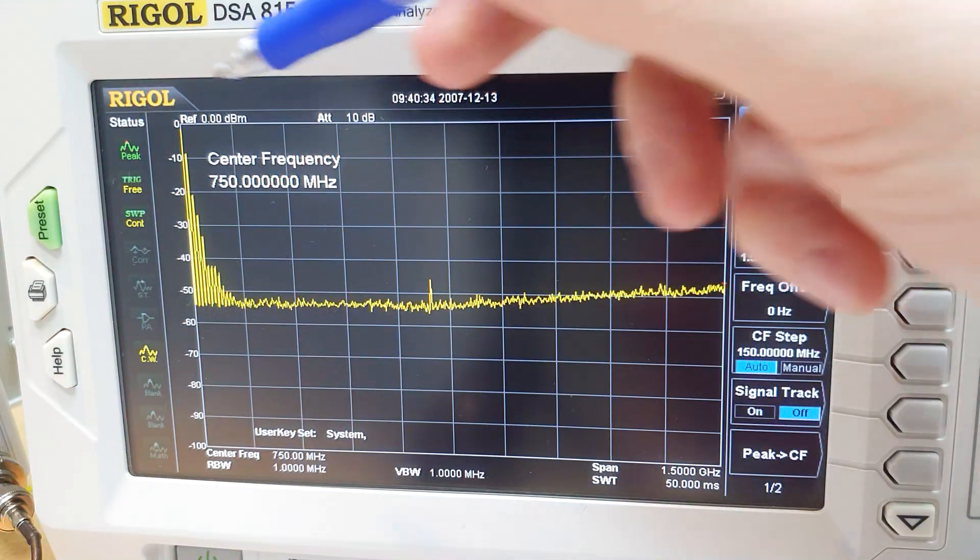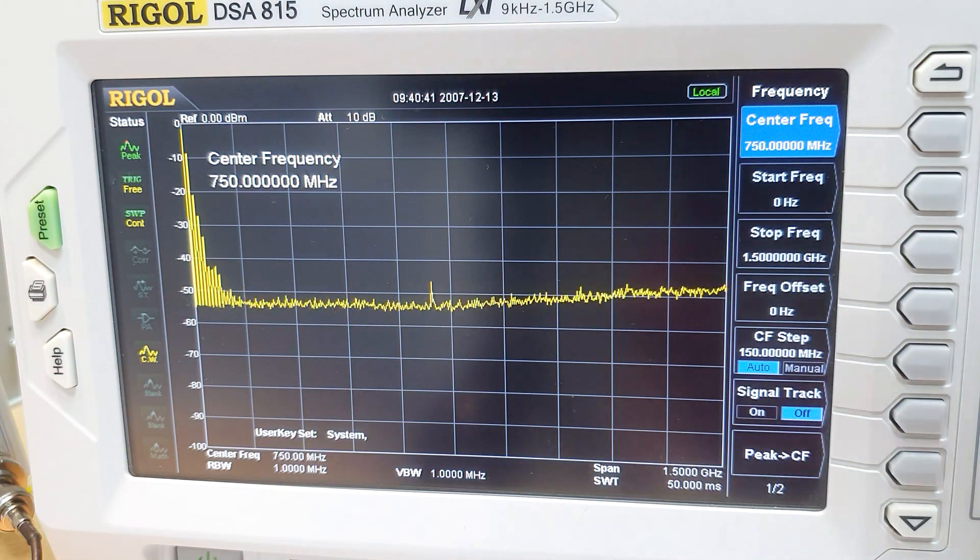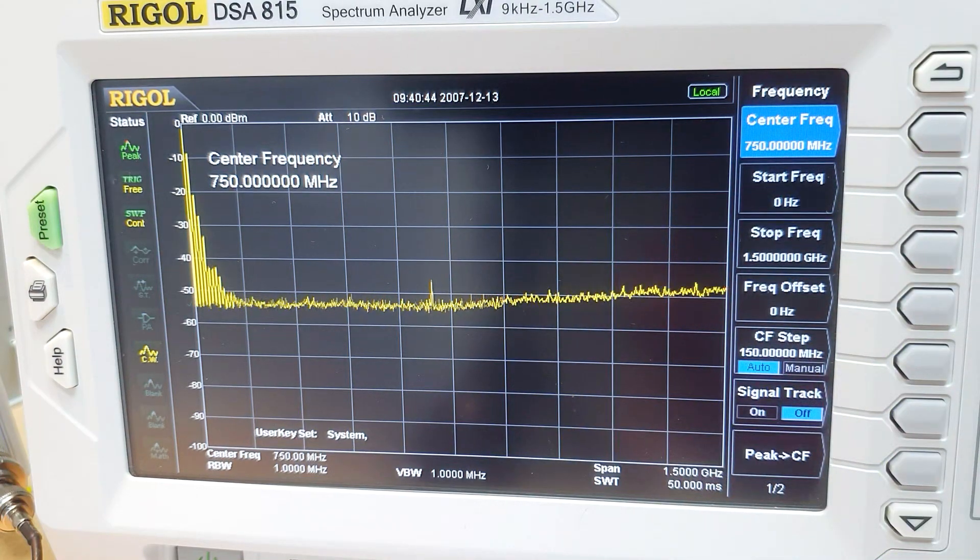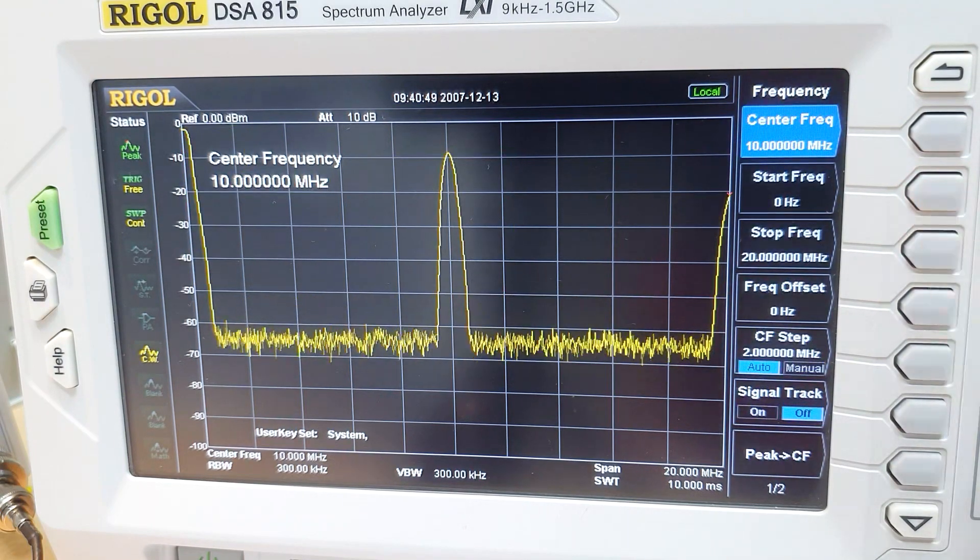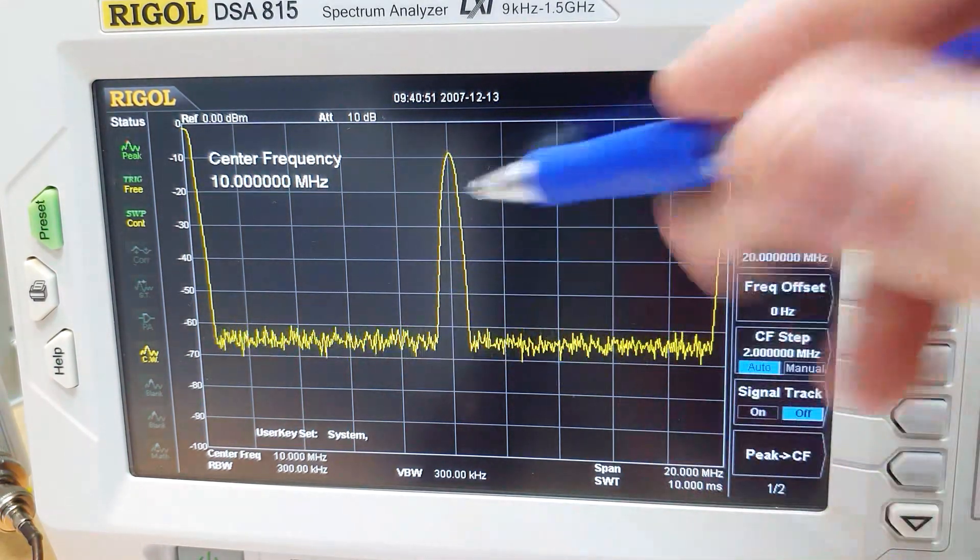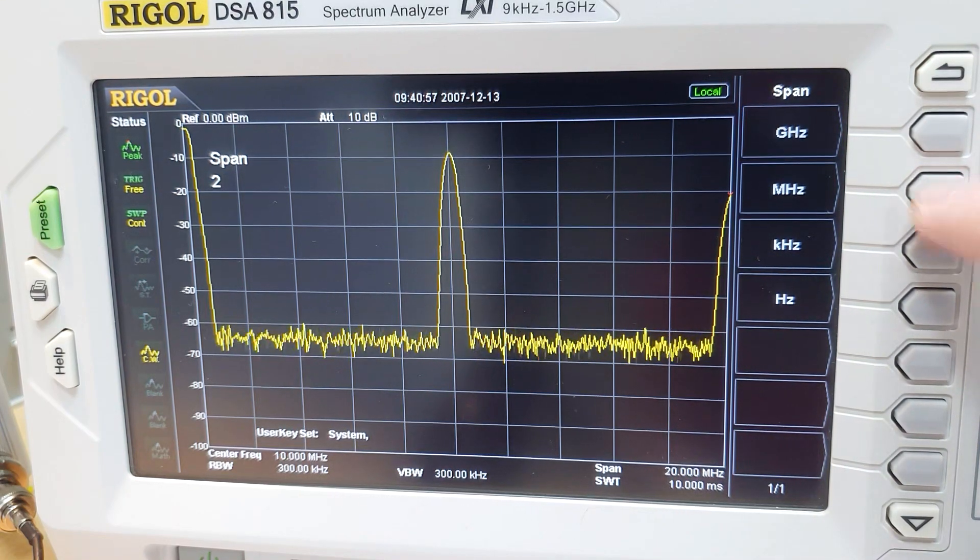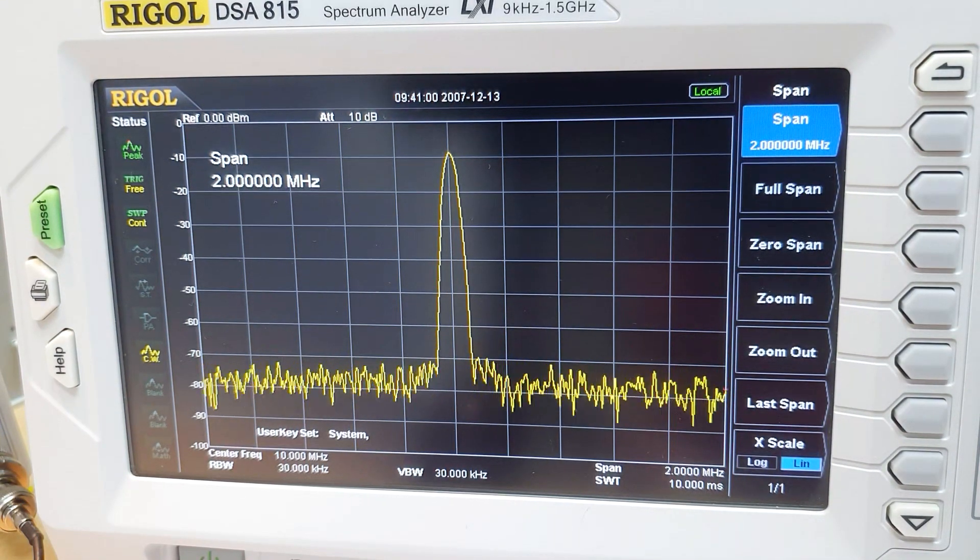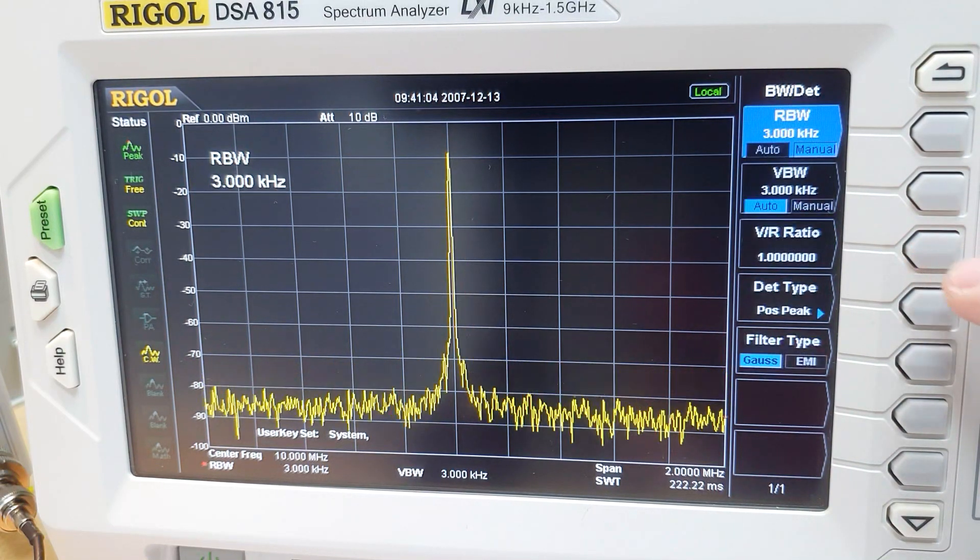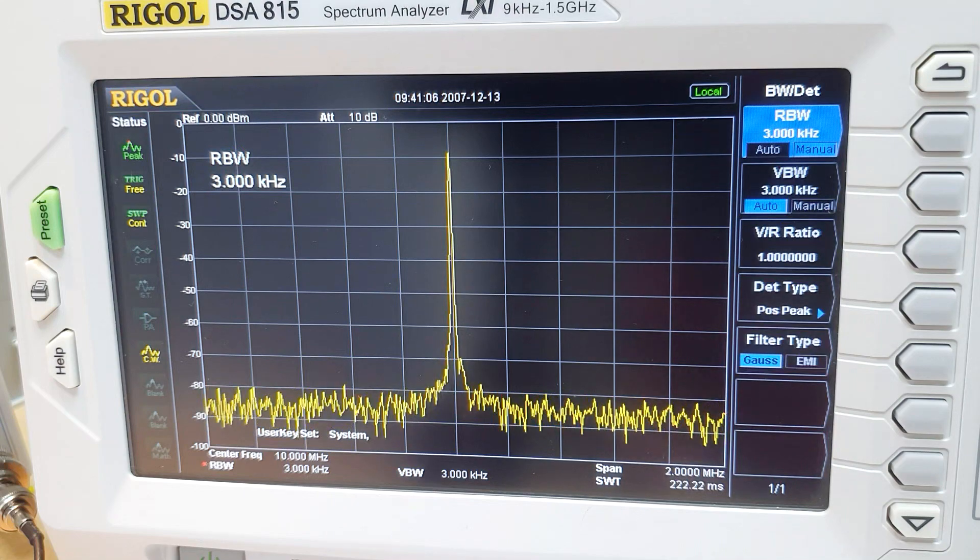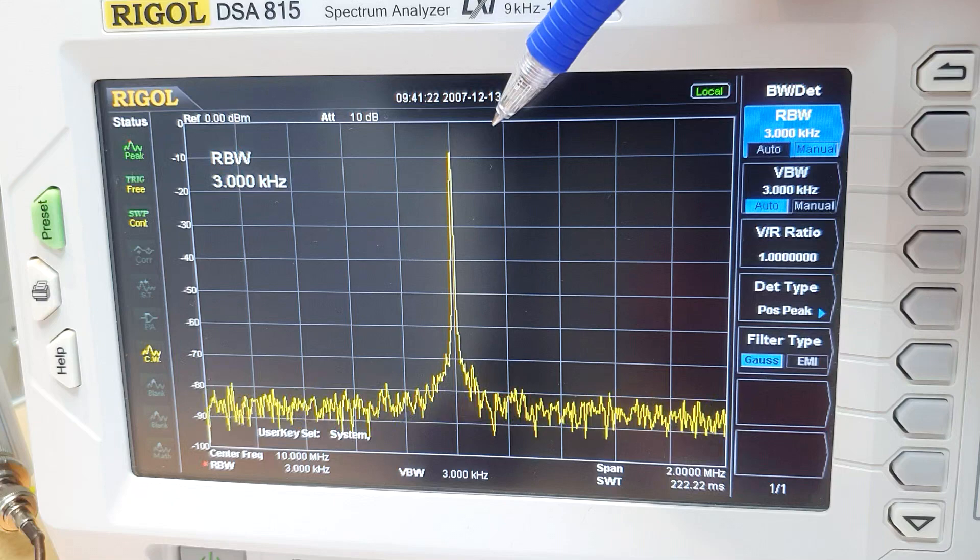We can see that we already have power at the output of the amplifier. The first thing we're gonna do is center the frequency to the 10 meg signal we are inputting on the amplifier. And we can see here the output. Let's change the span and let's increase the frequency resolution. Here we can see the tone of the signal generator amplified by the radio frequency amplifier.